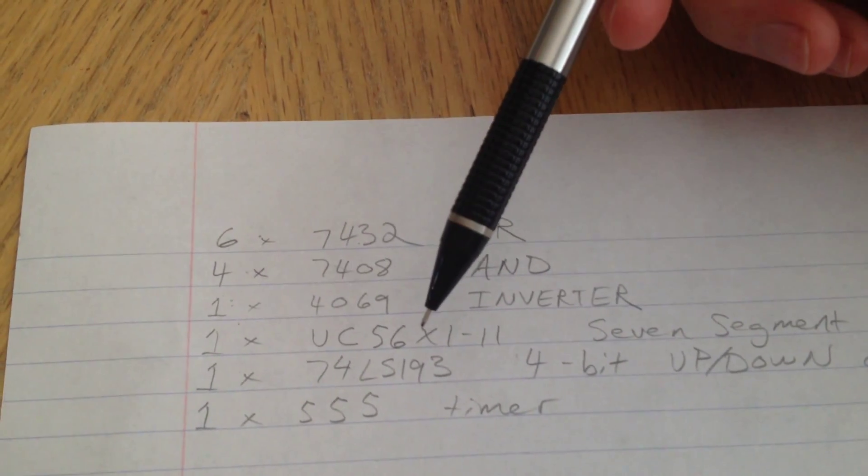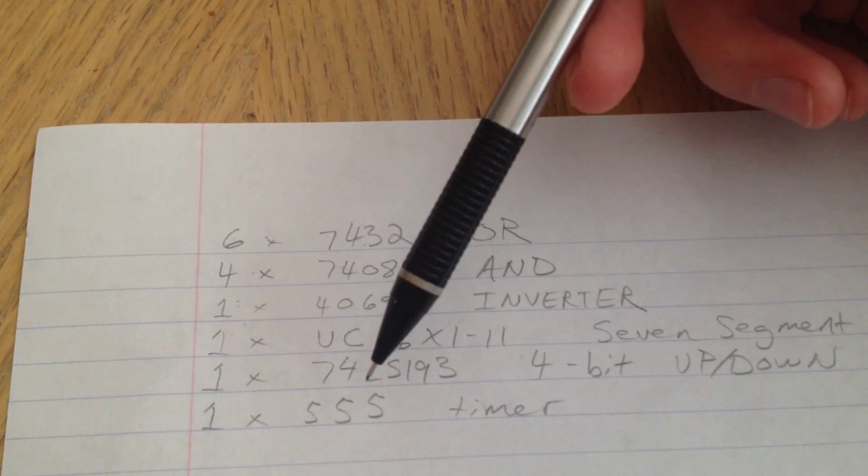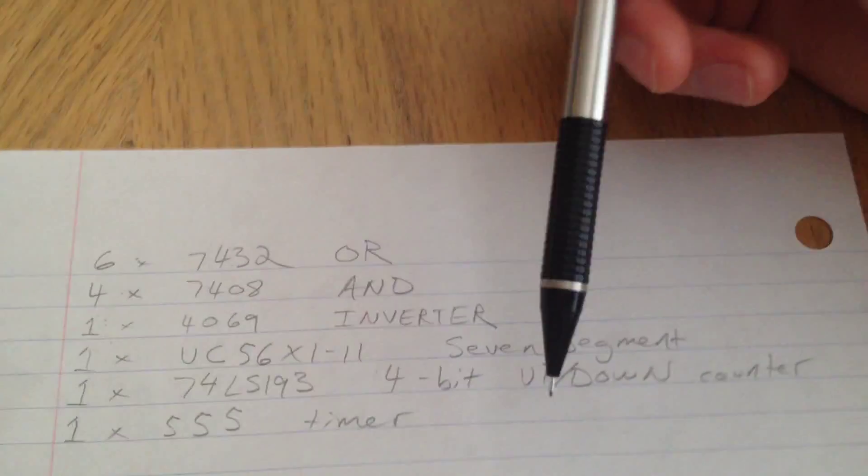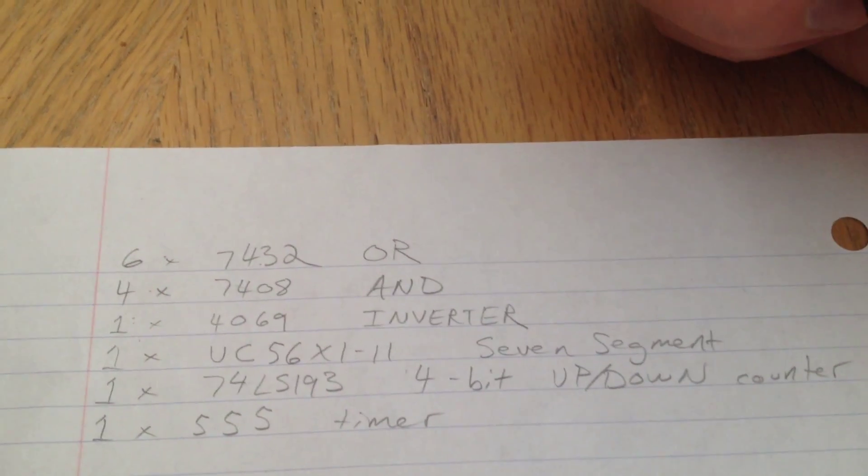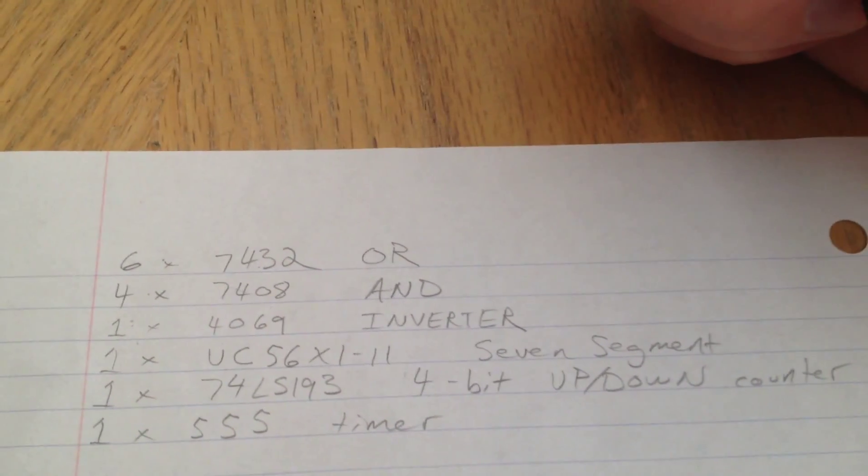The other three down here, or I'm sorry, the last two down here are optional. If you want to use push buttons to generate the binary number yourself, you can.